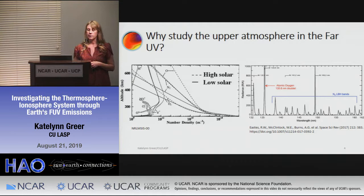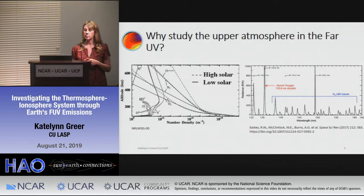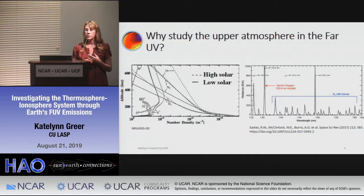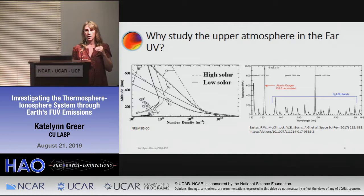Why study the upper atmosphere in the far ultraviolet? When you look at these two plots together, this helps answer the question. On the right, you have a spectrum of what Earth's atmosphere looks like in the upper atmosphere — there's an oxygen emission at 135.6 nanometers and a bunch of emissions from N2, the Lyman-Burge-Hopfield bands. On the left, the constituents above 100 kilometers are dominated by oxygen and nitrogen.